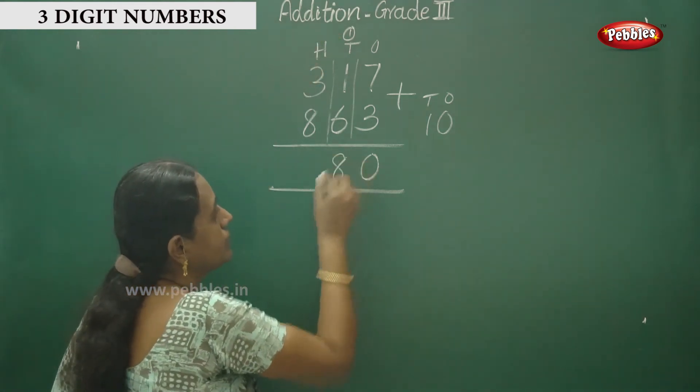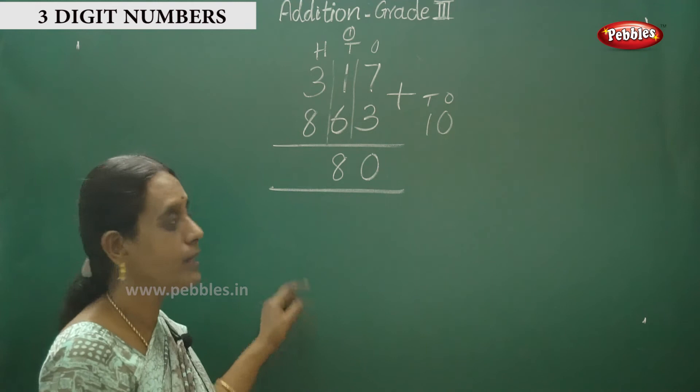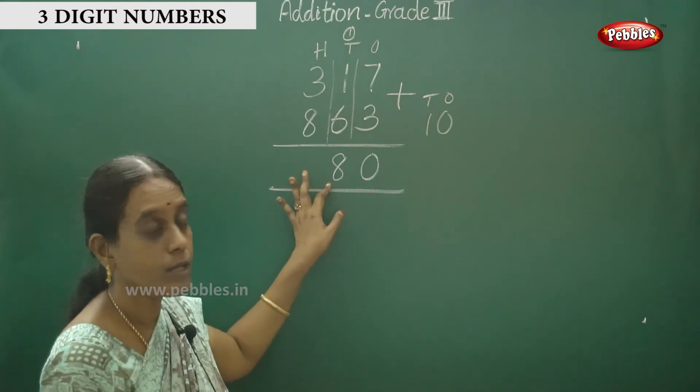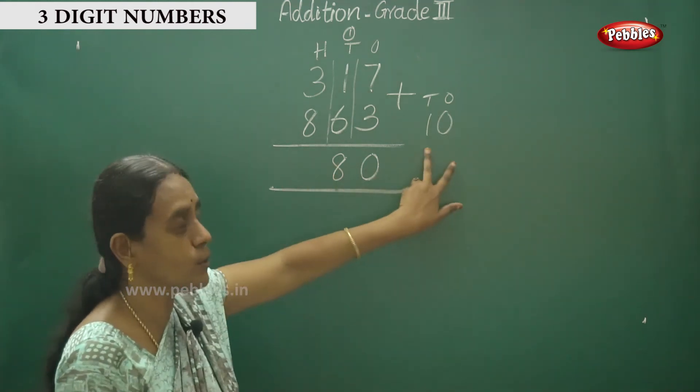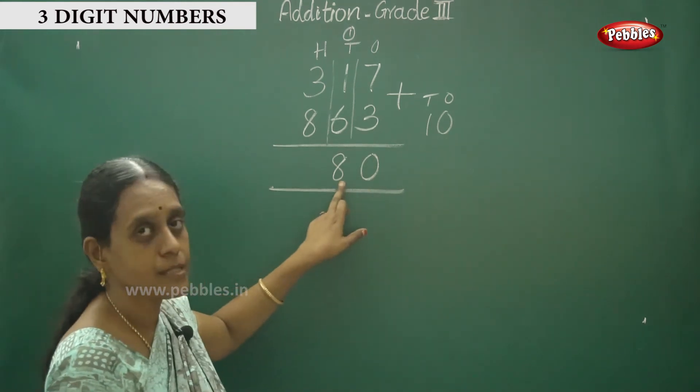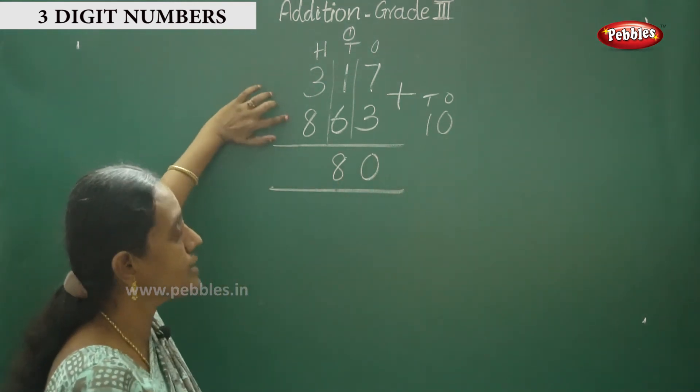Eight. If it's single digit, that's the answer. If it's two digits, then what do we do? We carry over. Here, eight.